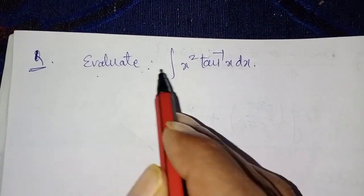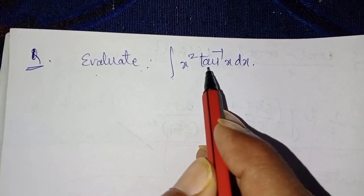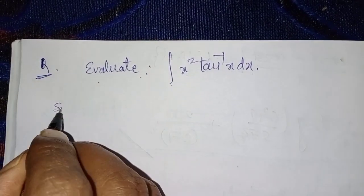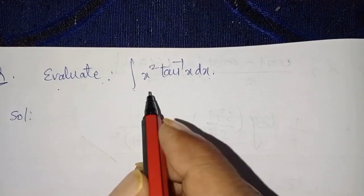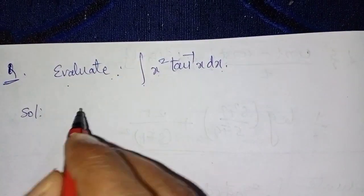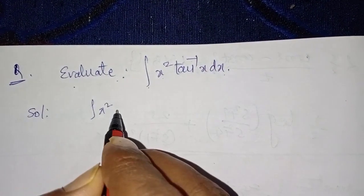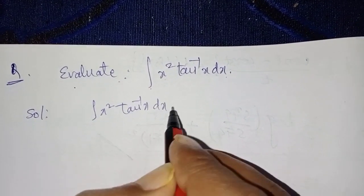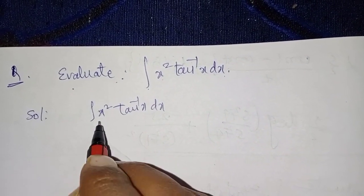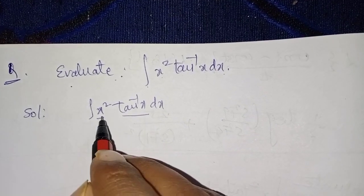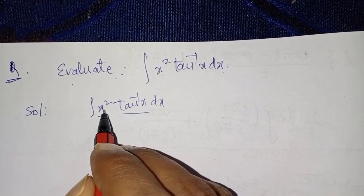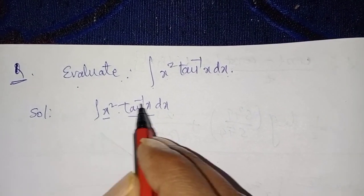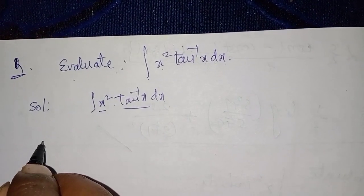Evaluate the integral of x² times tan⁻¹x dx. Here x² and tan⁻¹x are both different types of functions in multiplication, and it has an integral. In this type of question we must use integration by parts.